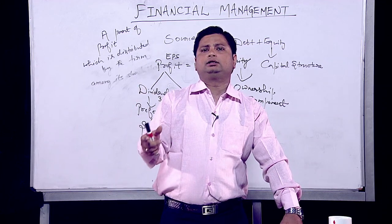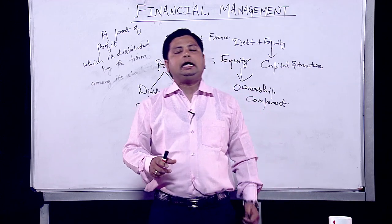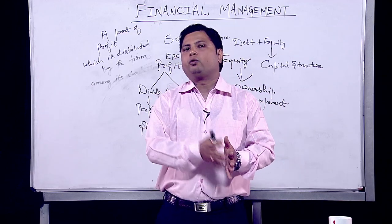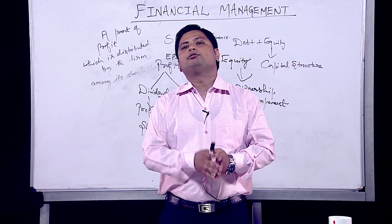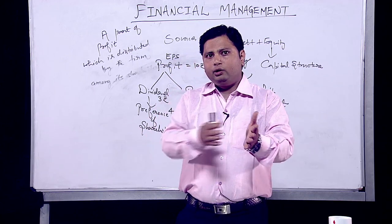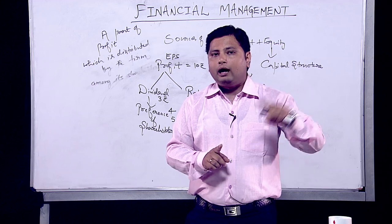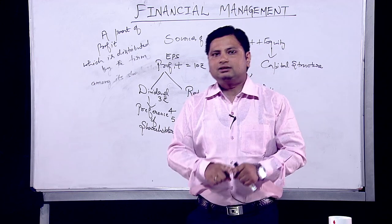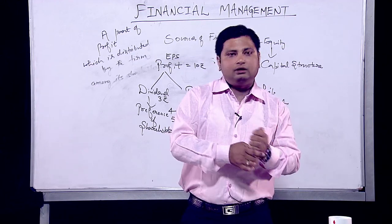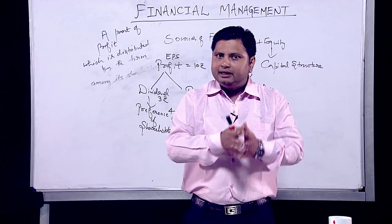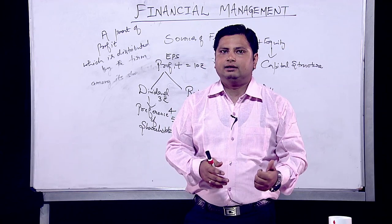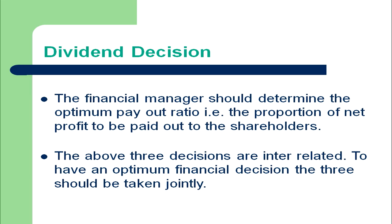All three financial decisions — investment, financing, and dividend — are interconnected and interwoven; they act and react on one another. You cannot take one decision in isolation from the other two. For example, once you decide to invest in a machine (investment decision), you must decide how to raise funds (financing decision), and then how to distribute returns as dividend or retain them. Together they determine the value of the firm.